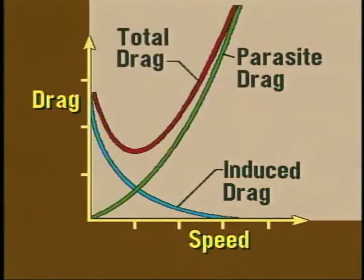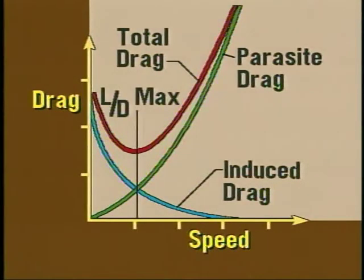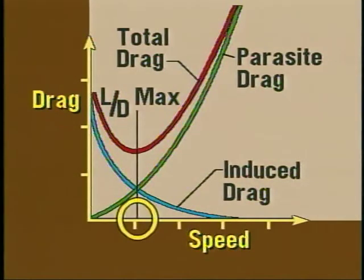If the two drag curves are combined and the values added together, we can find a point where drag is at a minimum. This point is known as L over D max, which is where lift, when compared to drag, is at its greatest. In later sections, you will see that flying the airplane at this speed provides the best glide ratio and other performance benefits.